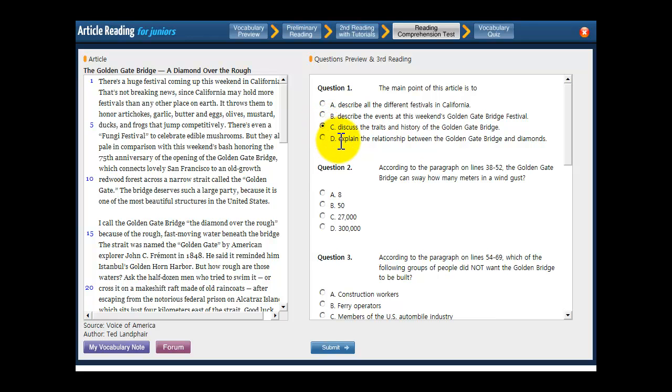What about C? Discuss the traits and history of the Golden Gate Bridge. Now, our prediction was it tells us the history of the bridge, how it was built, and what it's made of. And that is more or less what this answer choice says. Traits means things that describe it, what it looks like, what it's made of, what color it is, stuff like that. And history is history. Let's choose C, but always read the last answer choice just to make sure that you're not missing out on a better answer. Explain the relationship between the Golden Gate Bridge and diamonds. That's not true. It does mention diamonds, but it mentions diamonds because it's saying the Golden Gate Bridge is like a diamond. It's something that's amazing and beautiful. So D is definitely not the right answer. Look at C, click it again, just to be sure, and then let's move on to the next question, which is going to be number five.